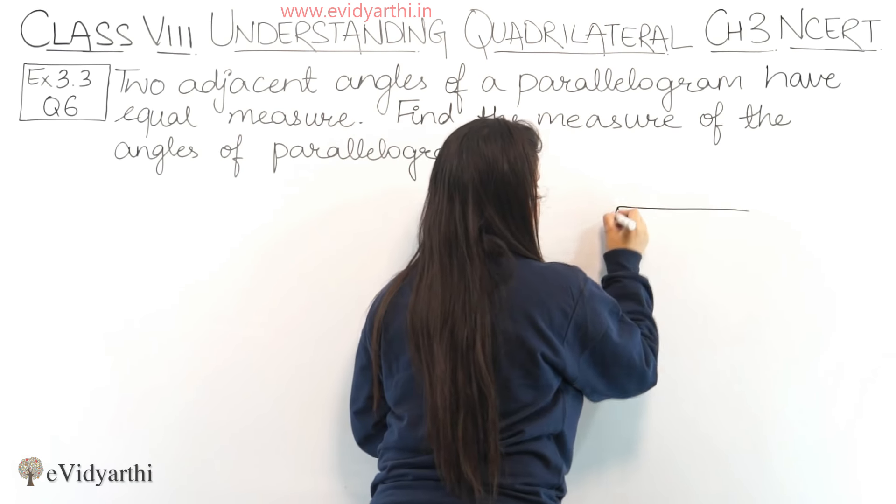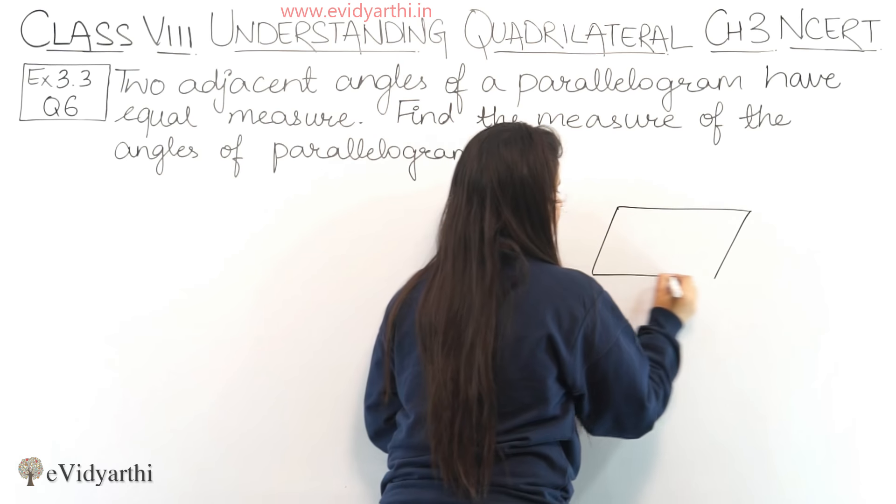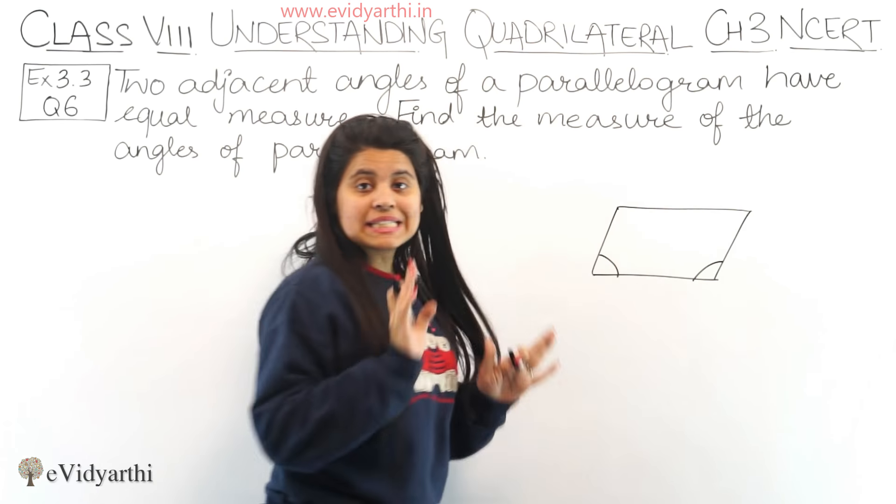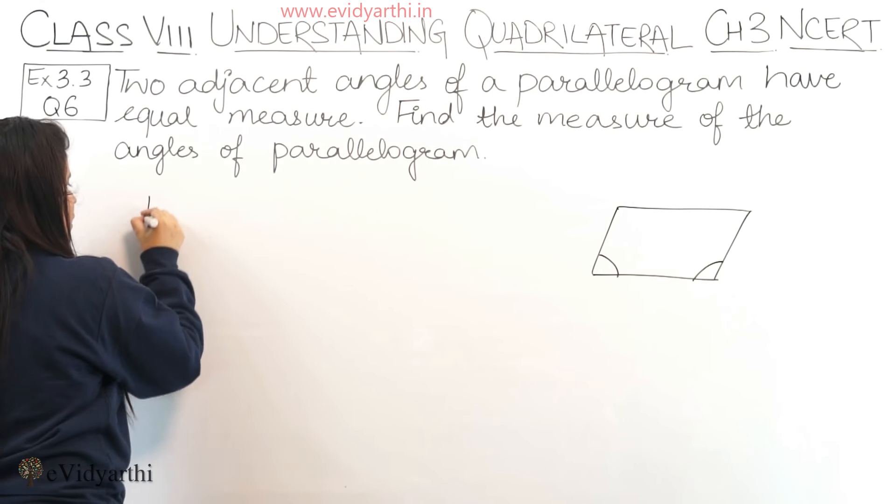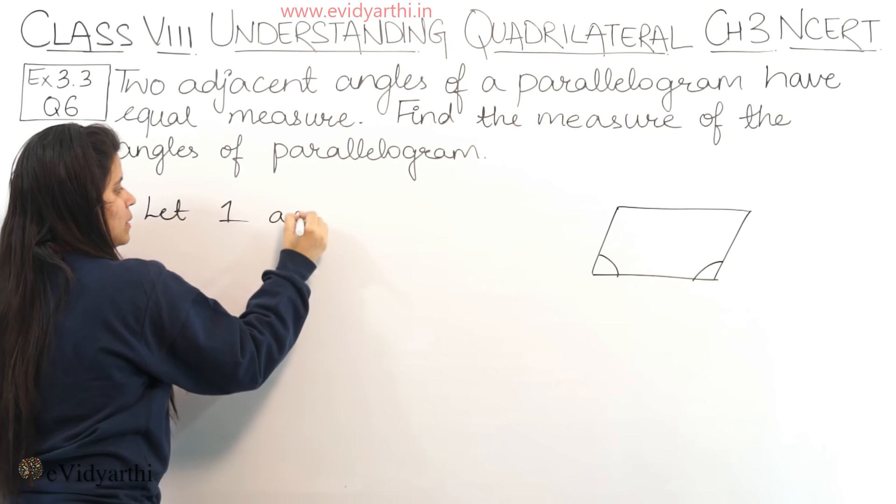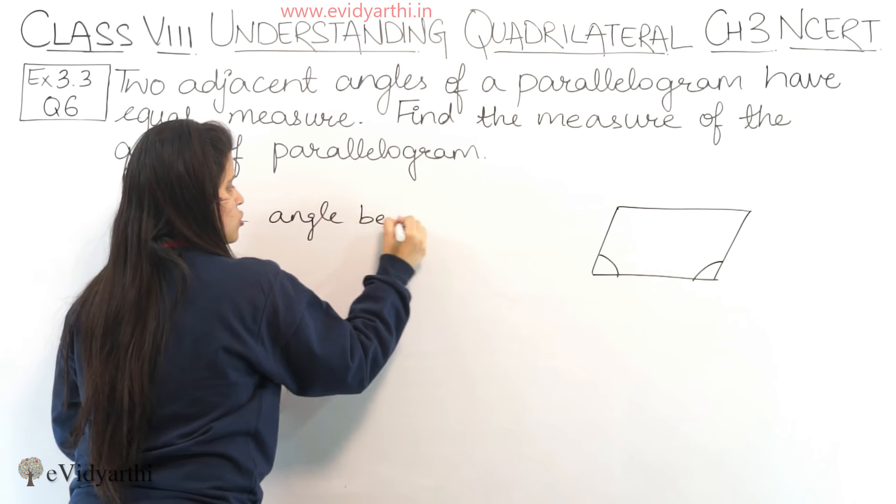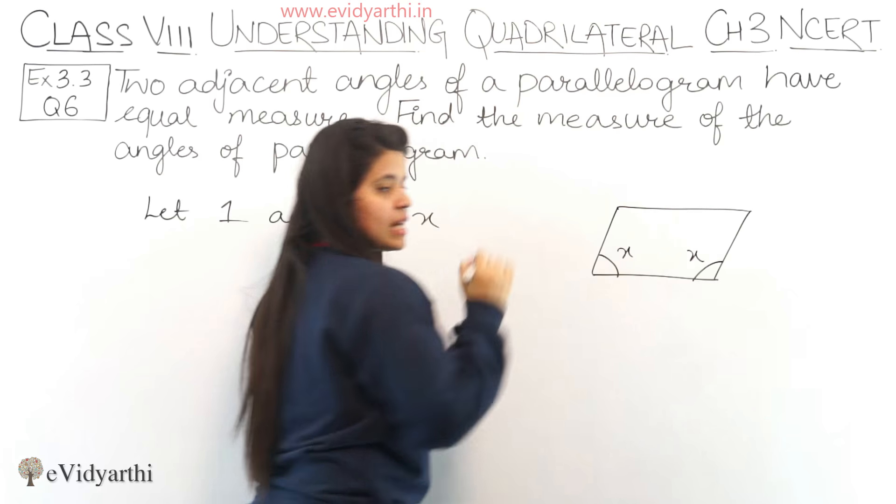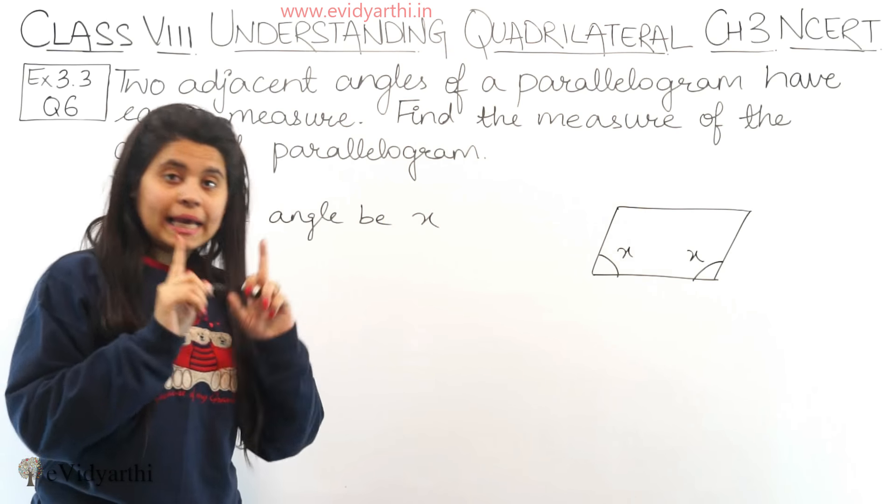Let's suppose this is our parallelogram and the two adjacent angles are the same, so these two have the same measure. If I let one angle be x, then the other angle is also x, because it is given that the two have equal measure.